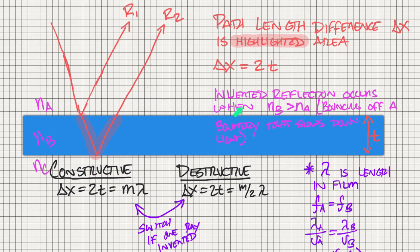The inverted reflection occurs when N_B, or the light which it's going to reflect off of, is greater than the light which it is coming from. So bouncing off a boundary that slows down the light is going to cause an inverted reflection.